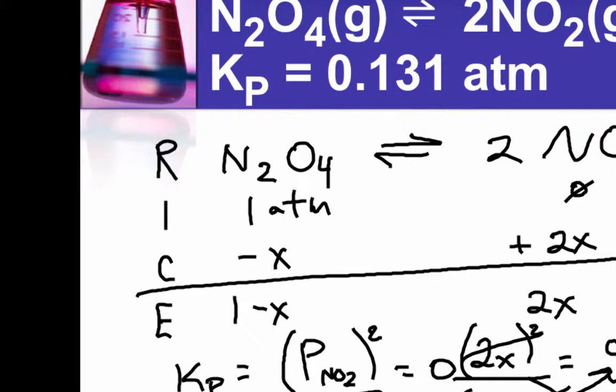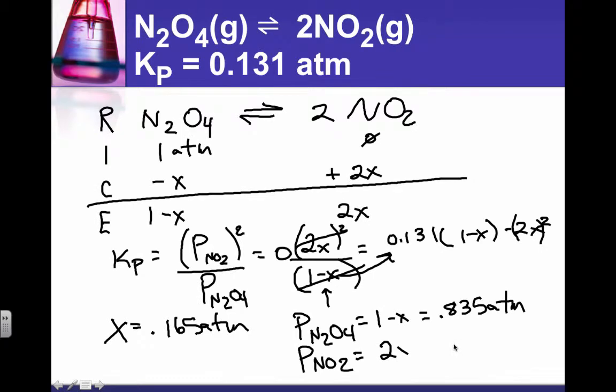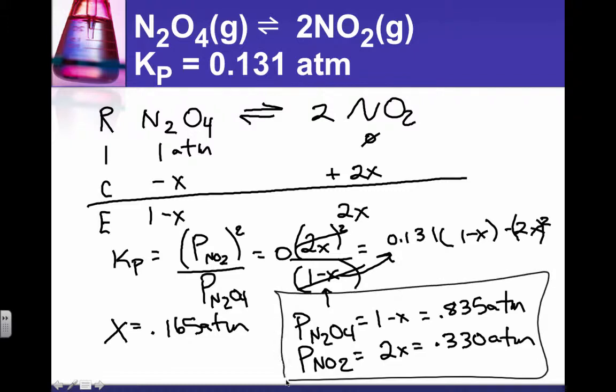That's in atmospheres, and then the pressure of NO2 is 2 times x, or 2 times 0.165. So that would be 0.330 atmospheres. There's our equilibrium pressures, and we solved an equilibrium problem with a midrange value for Kp.